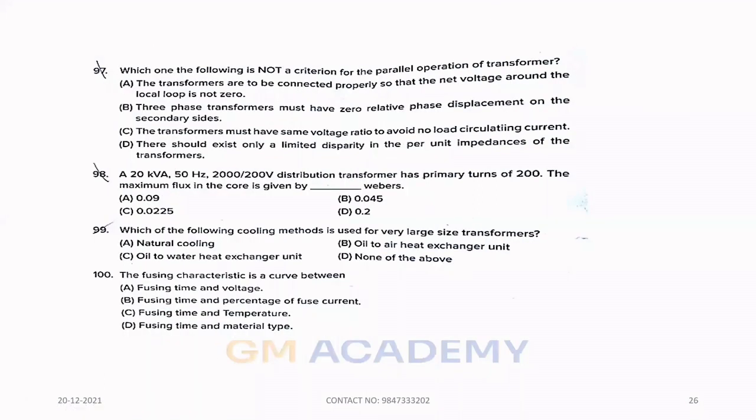Ninety-seven. Which one of the following is not a criteria for the parallel operation of a transformer? Option A. The transformers are to be connected properly so that the net voltage around the local loop is not zero. Ninety-eight. A 20 kVA, 50 hertz, 2000/200 volt distribution transformer has primary turns of 200. The maximum flux in the core is given by. E1 equals 4.44 F flux M N1. Substituting values, option B, 0.045 Weber.